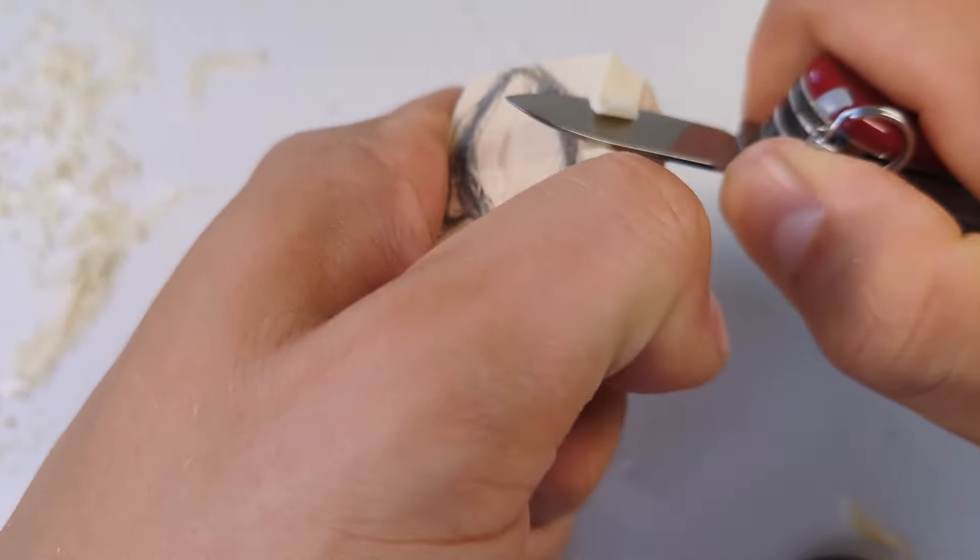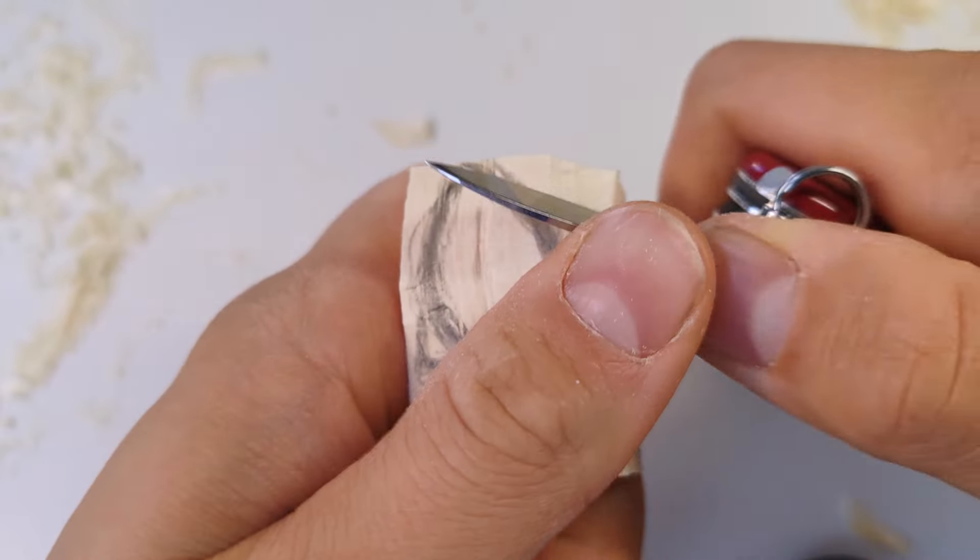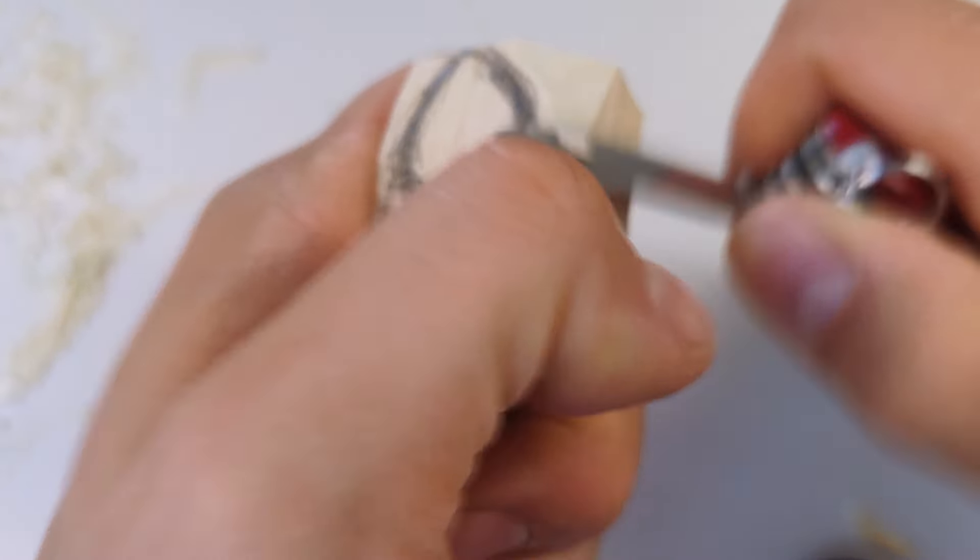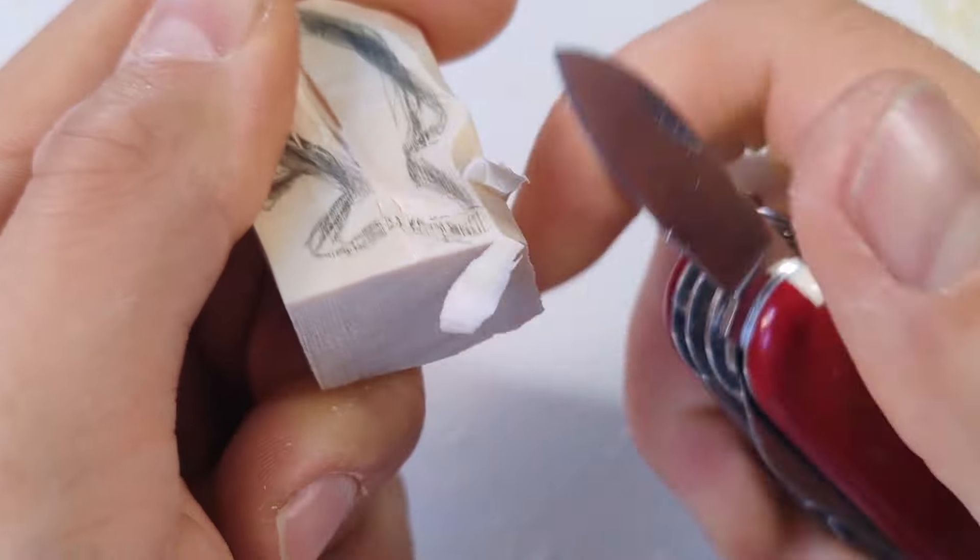Then we can carve away most of the wood from outside the sketch. Rough cuts work well with outside curves like this. Inside curves and corners require other techniques.